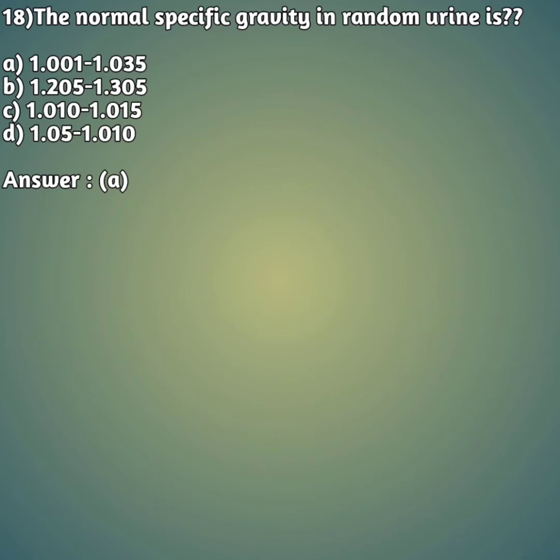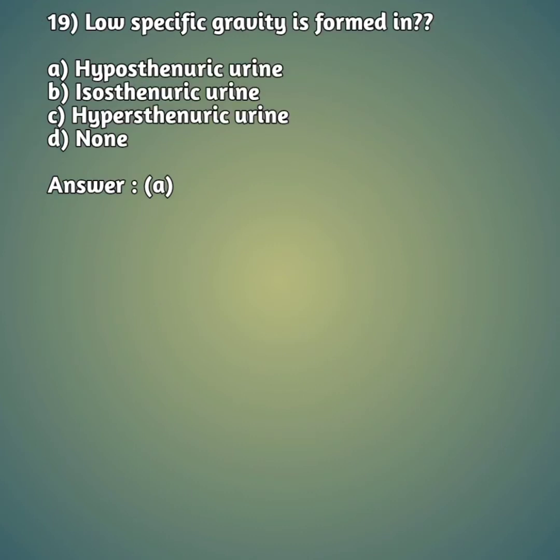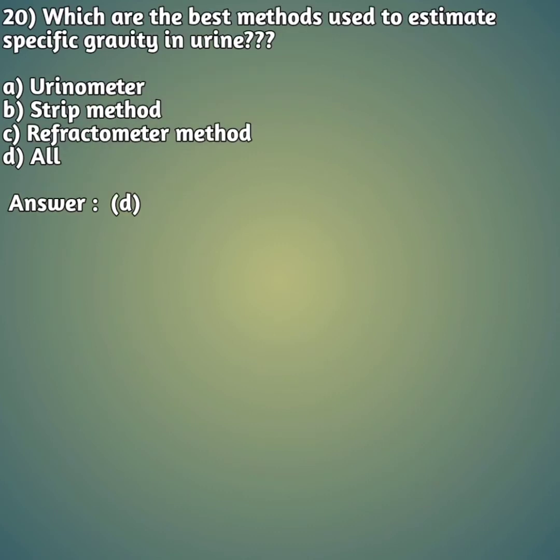Question 19: Low specific gravity is formed in — option A: hyposthenuric urine, option B: isosthenuric urine, option C: hyposthenuric urine, option D: none. The right answer is option A, hyposthenuric urine.